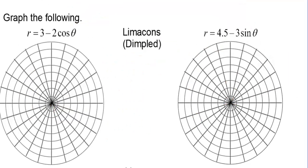These next ones are limaçons that are dimpled. Notice that the biggest cosine can be is 1, making the cosine term equal to 2. So 3 minus 2 gives a positive value — all our r's are going to be positive. The 3 is bigger than 2 but is not twice that or more. Because of that, we're going to have a dimpled limaçon.